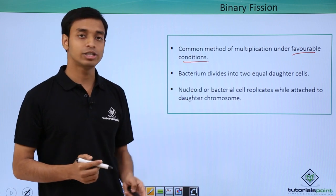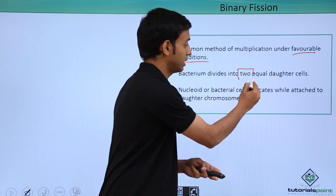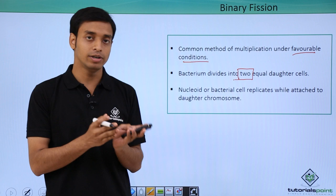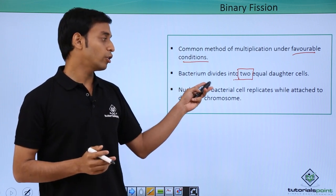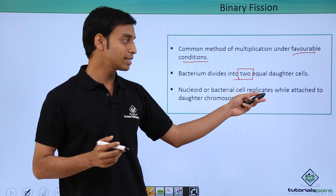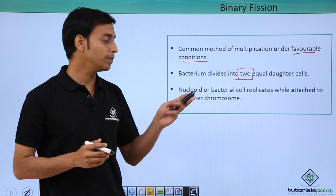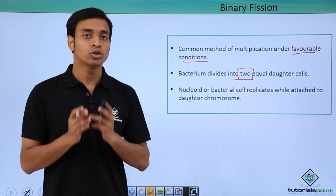Because of binary fission, a bacterium divides into two equal daughter cells. So how does this happen? We'll be looking into this in the next slide. The nucleoid or bacterial cell replicates while it is in an attached position to the daughter chromosomes.